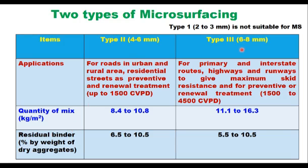There are two types of microsurfacing based on thickness of the layer: Type 2 and Type 3. Type 1, which has a thickness of 2 to 3 mm, is not suitable for microsurfacing. Type 2 is used for roads in urban and rural areas and residential streets as preventive and renewal treatment where traffic is not more than 1500 CVPD, whereas Type 3 is used on primary and interstate routes, highways, and runways for maximum skid resistance when traffic is 1500 to 4500 commercial vehicles per day.